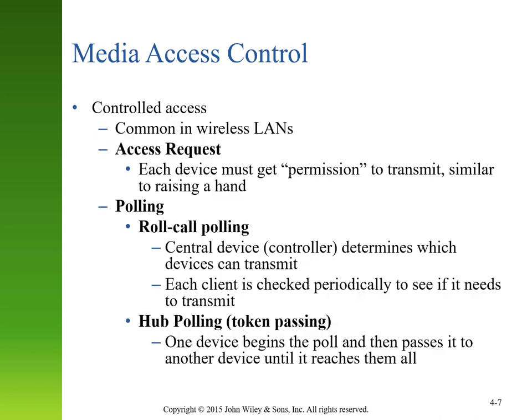An alternative to contention-based media access control is controlled access, which is common in wireless local area networks. One approach is access request, where a device must get permission from a central authority — like your Wi-Fi router — to transmit, and only one device at any given moment has permission. Another approach is roll call polling, where a central device asks all other devices if they have anything to transmit, moving from device to device giving each one an equal opportunity.